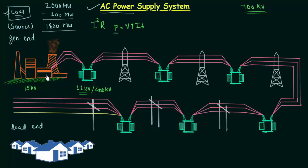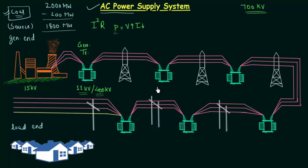Along with the generator, we require a transformer acting as a step-up transformer, which we call the generator transformer. It is the same as other power transformers, but its operation is different: the generator transformer always works as step-up, whereas general power transformers can work as step-up or step-down. So there is always a generator transformer associated with the generator to step up the voltage. Once the voltage is stepped up, we transmit it over a long distance, and at the load end we need to step it back down.